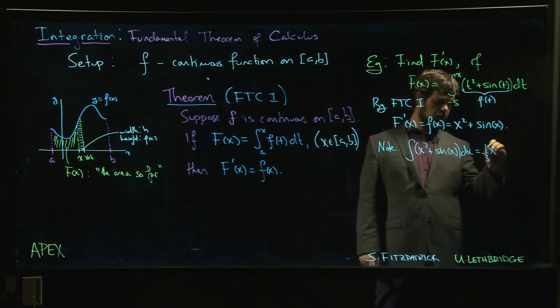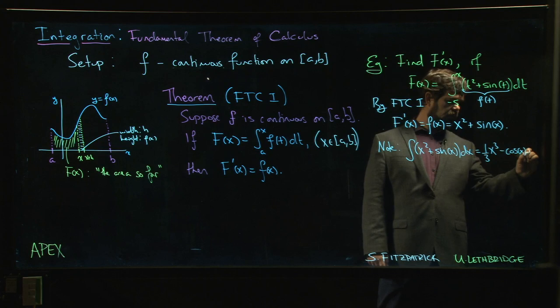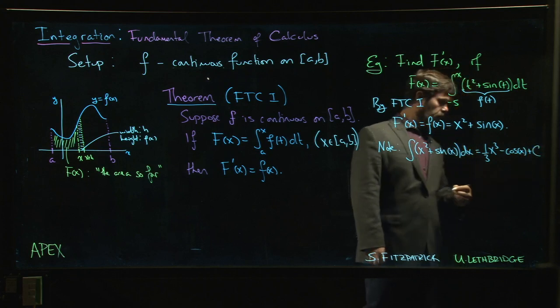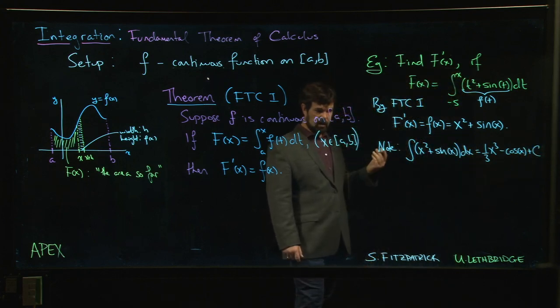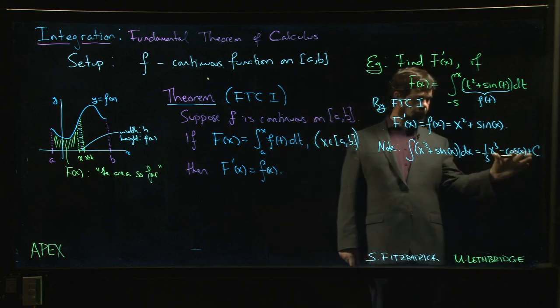If we did the indefinite integral of x squared plus sine x dx, we know how this works. We get one third x cubed minus cos x plus possibly some constant, plus c.